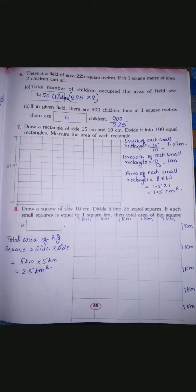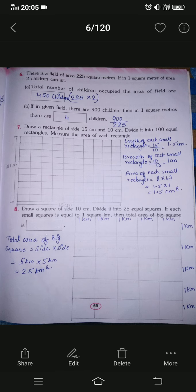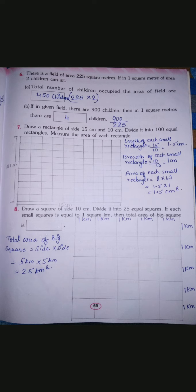Hello everyone, I hope all are doing good. In this lecture we will start with question number 7 of chapter number 11, which is Area and its Boundary. In our previous lecture we finished with question number 6. So in this lecture we'll begin with question number 7. The question says: draw a rectangle of side 15 centimeter and 10 centimeter, divide it into 100 equal rectangles, and measure the area of each rectangle.